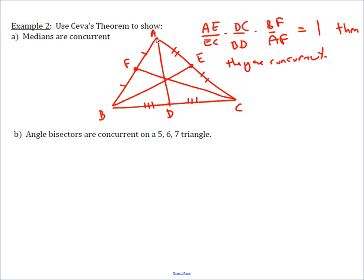Well, this is pretty obvious because of them being midpoints on the sides. All of them have a ratio of 1, so clearly AE over EC is 1, DC over BD is 1, and BF over AF is 1. So 1 times 1 times 1 equals 1.